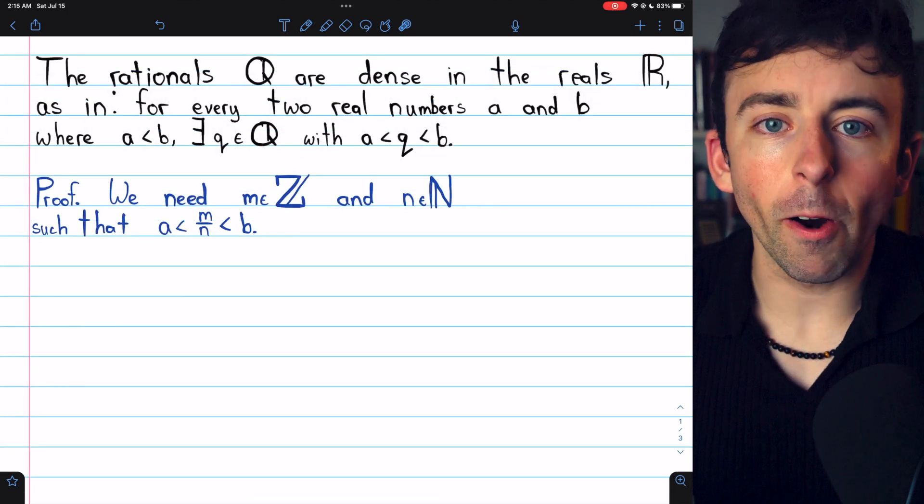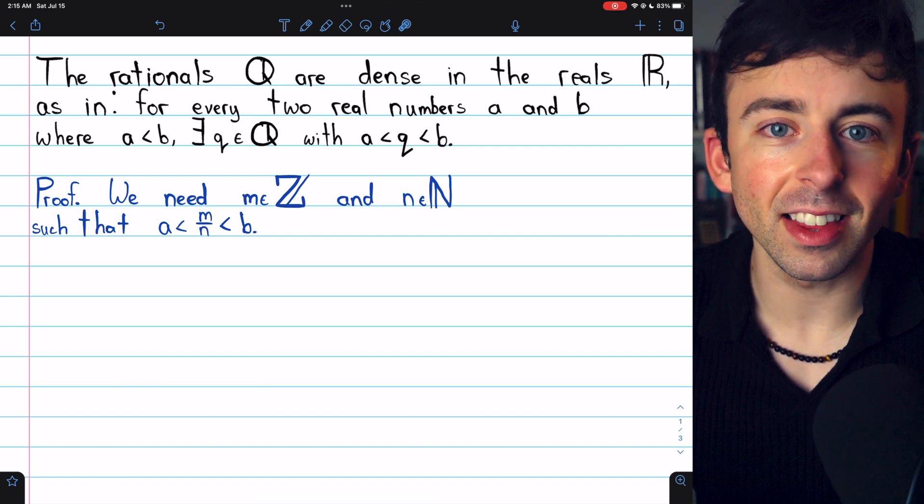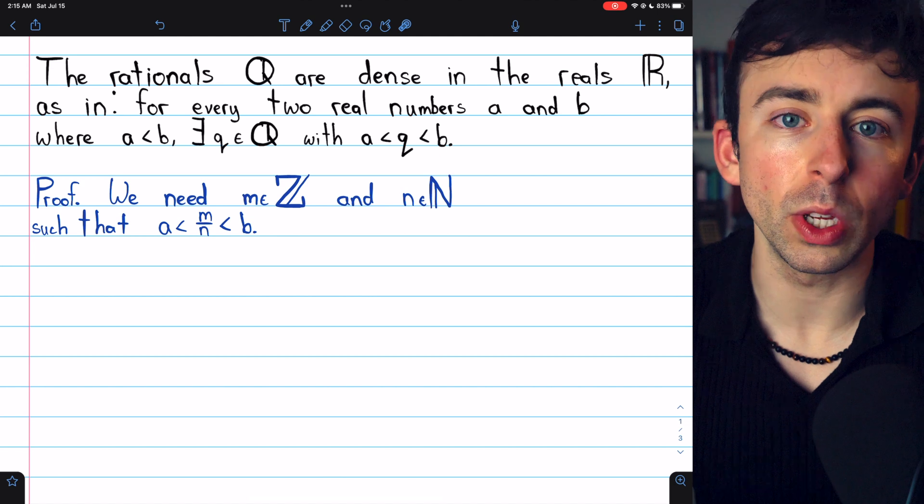For this proof, we'll need the Archimedean property, link in the description to my lesson on that. In short, it says that we can find a natural number as big as we want.